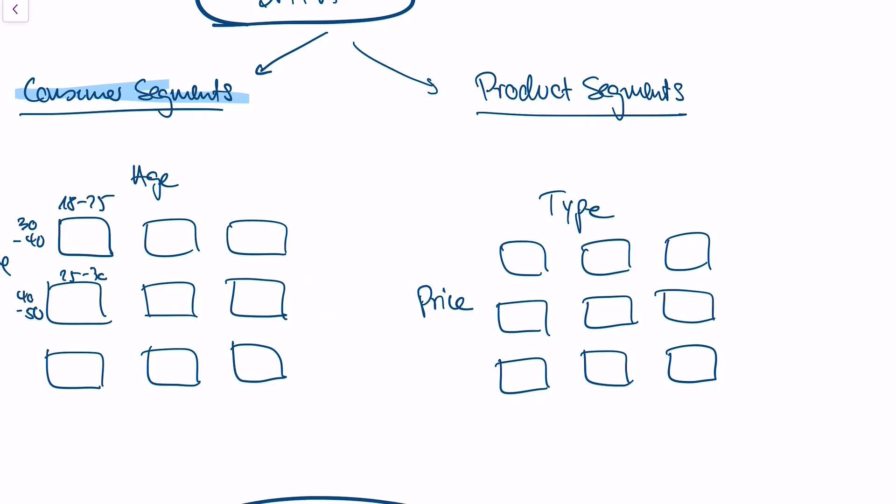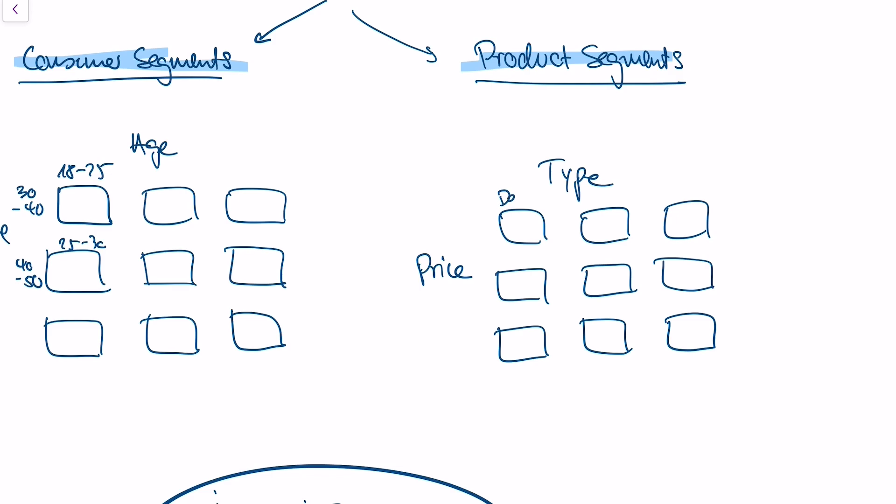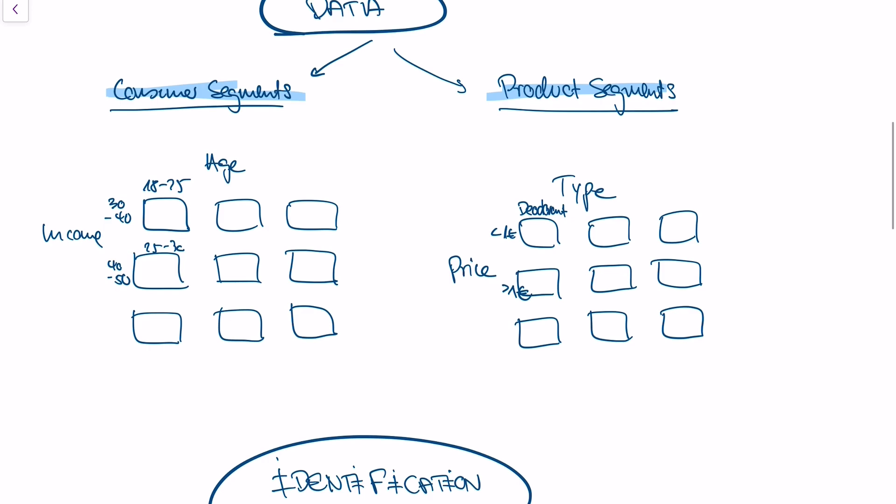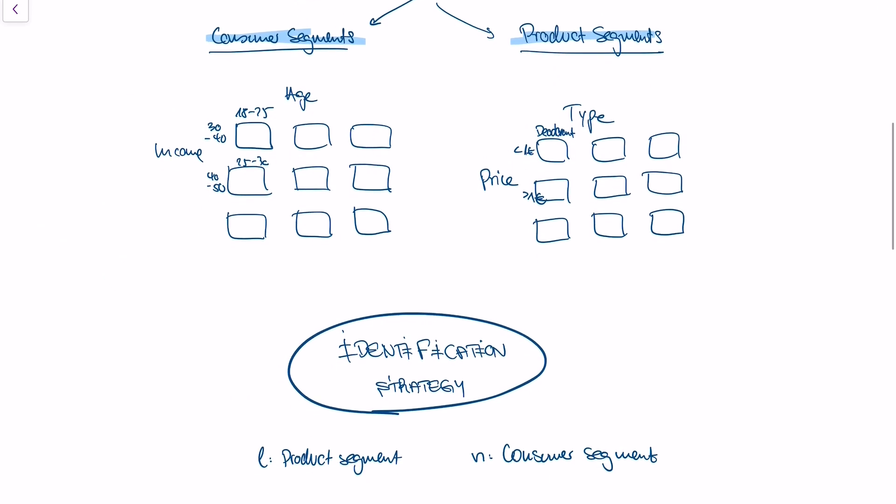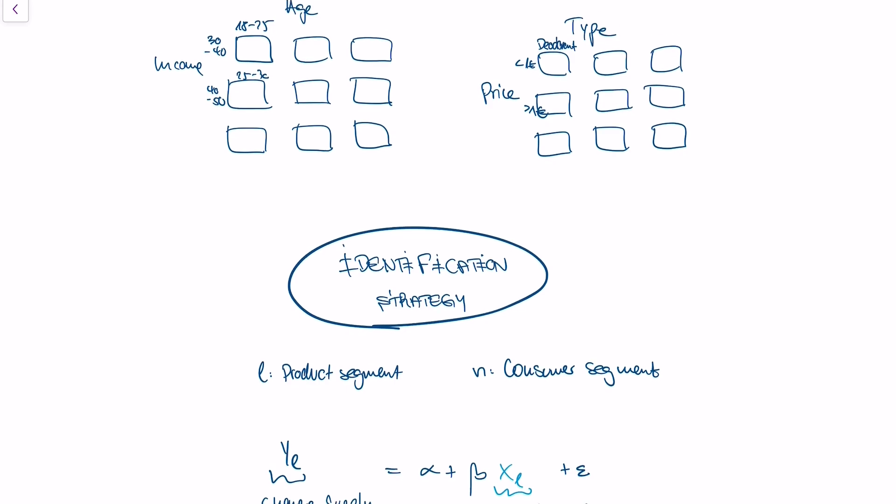The second type of data he has is actually scanner data from supermarkets with product segments, and they are segmented by type and price. So maybe we have deodorant and then we have deodorant for under a euro and for over a euro. So we have different product segments, the product segments of deodorant for under a euro and deodorant for over a euro.